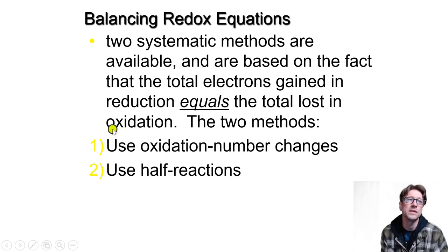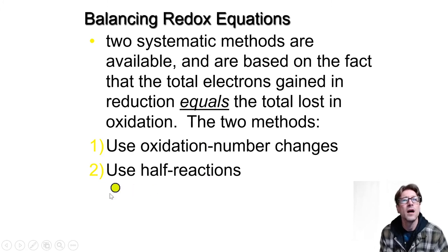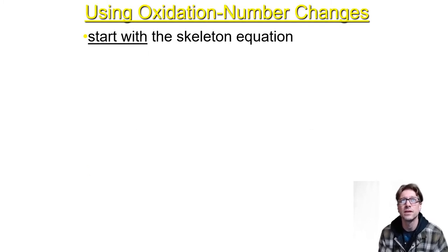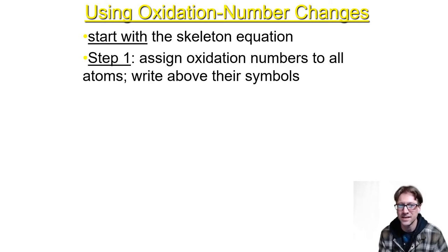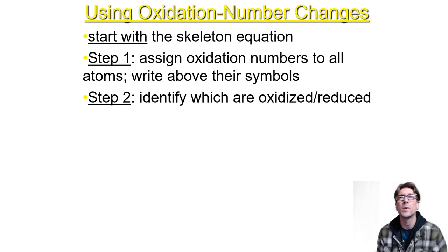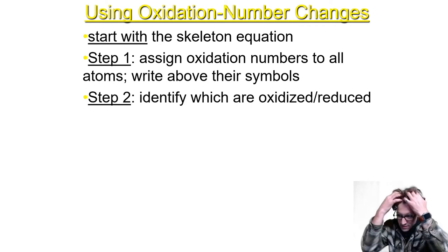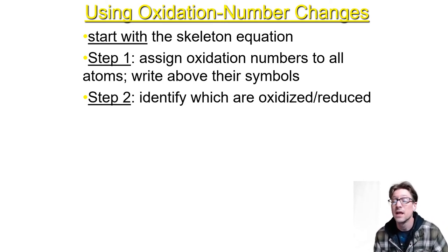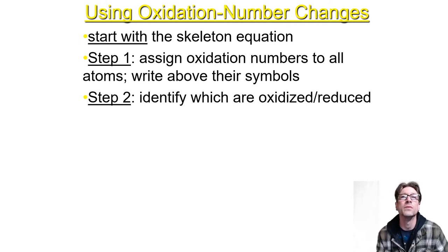The second method is balancing using half-reactions, which is easier for acidic and basic solutions. For the oxidation number change method: step one, assign oxidation numbers to all atoms and write them above their symbols to keep it systematic. Step two, identify which atoms are oxidized and which are reduced — whose oxidation number goes up lost electrons and is oxidized; whose goes down gained electrons and is reduced.